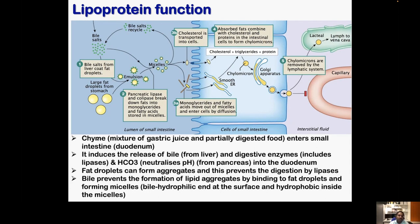This is where bile salts come in, coming from the liver. The bile salts will stick to the surface of the fat droplets, making an emulsion with a non-polar core and hydrophilic bile salts on the surface. Because of this emulsion structure, the pancreatic lipase enzyme can now access these molecules and digest them.